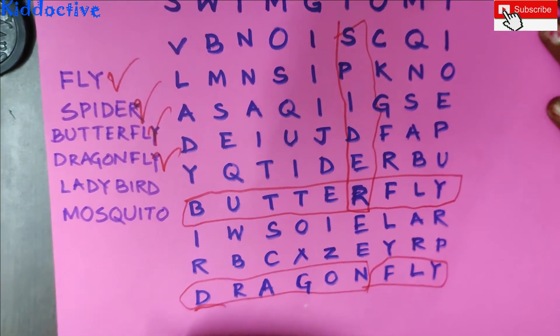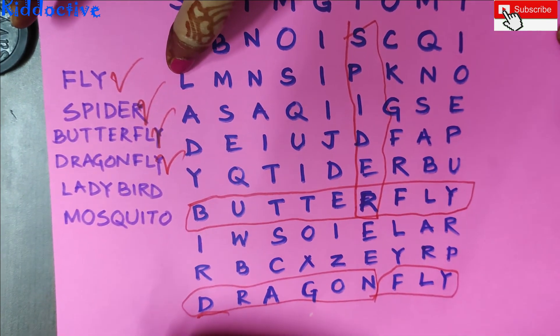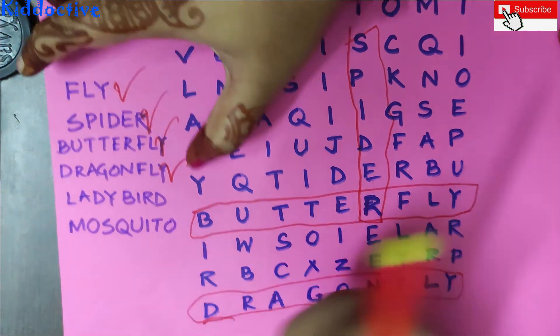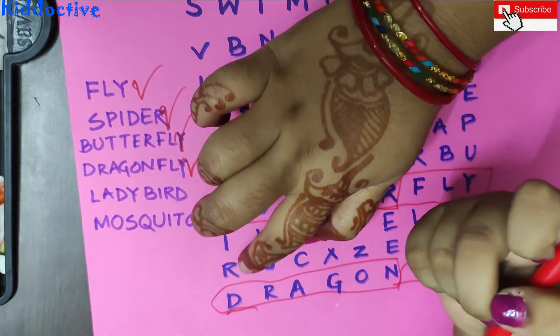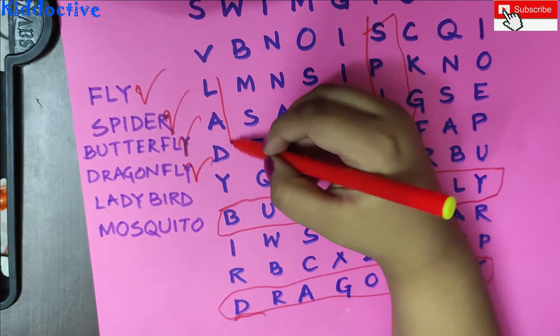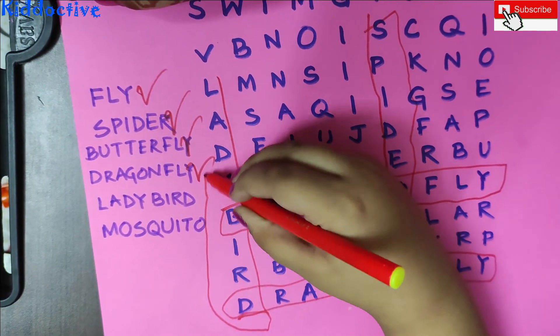Ladybird — where is it? It starts from L. L-A-D-Y-B-U-I-R-D. Ladybird — good job.